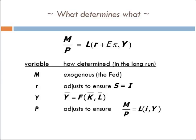P adjusts to ensure that we have this equilibrium in this money market or equilibrium between money supply and money demanded.